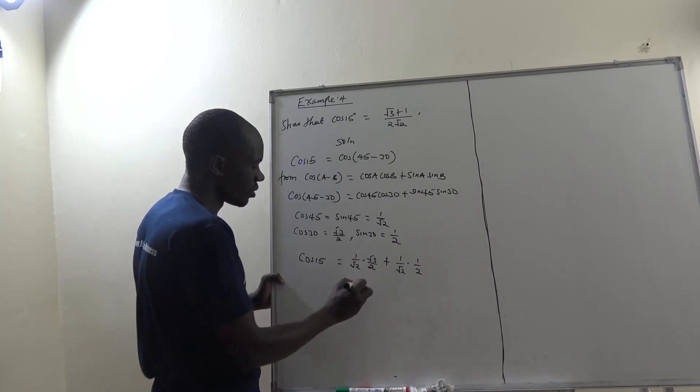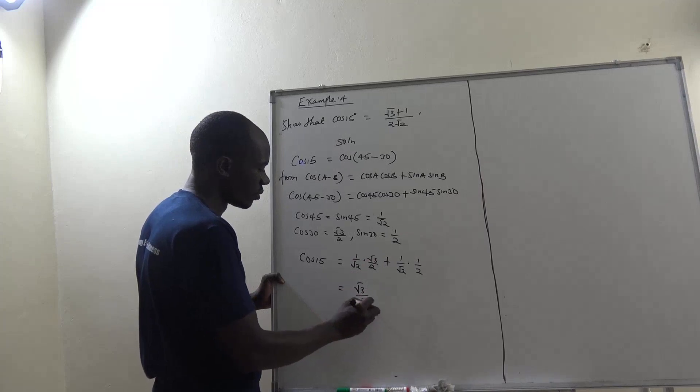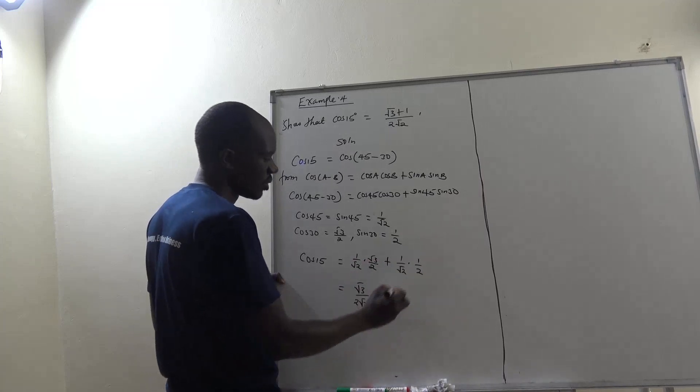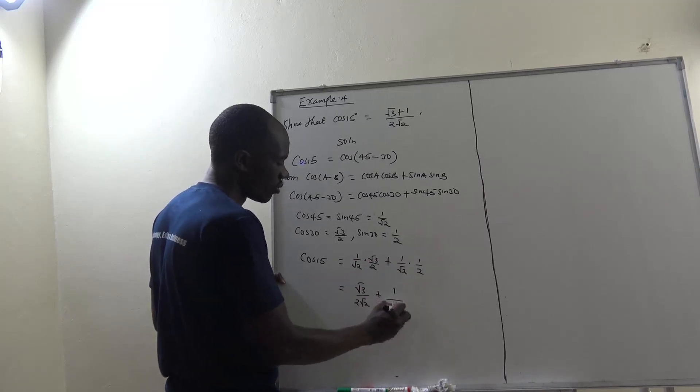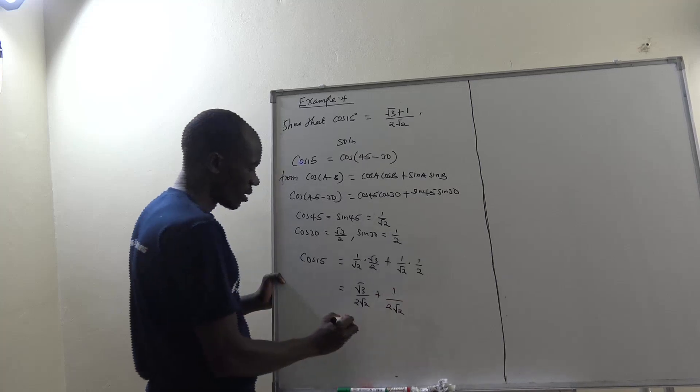So we go ahead. 1 times root 3, we are getting root 3 over 2 root 2, plus 1 times 1, we are getting 1 over 2 root 2.